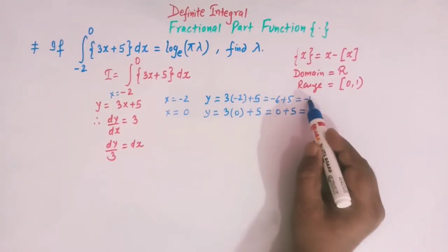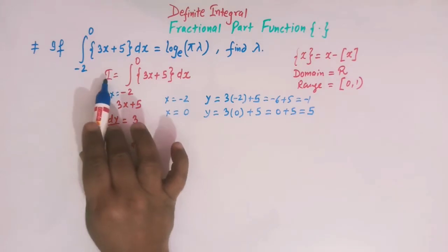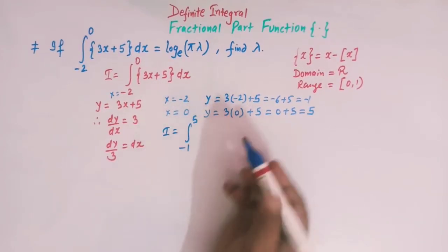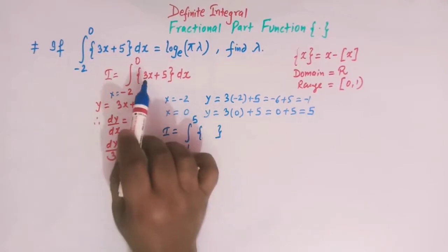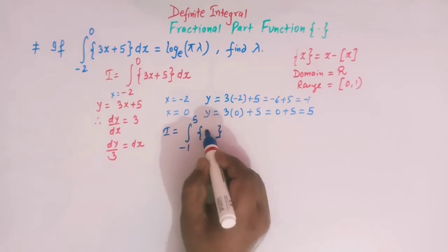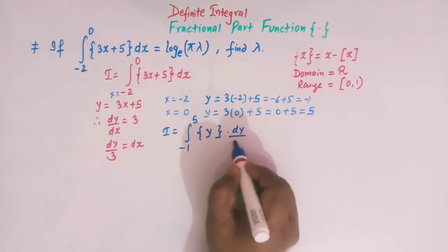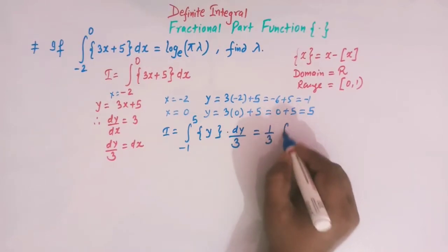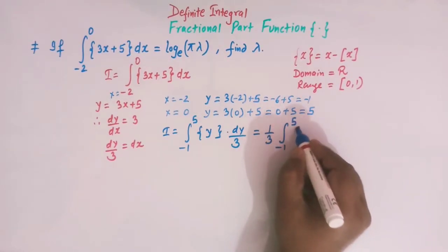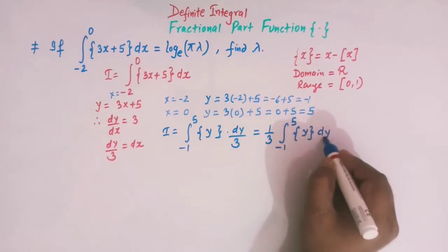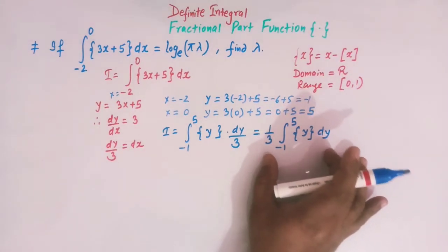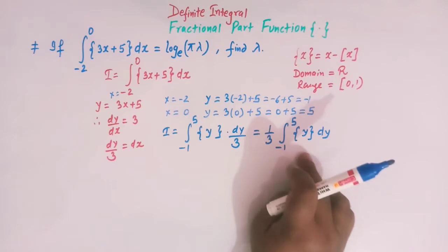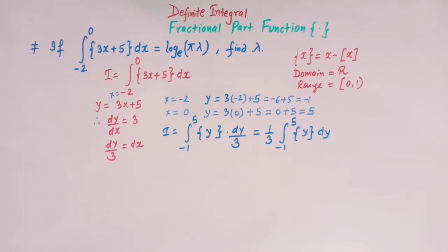So when x varies from minus 2 to 0, y varies from minus 1 to 5. The integral I in terms of y can now be written as the integral from minus 1 to 5 of the fractional part of y times dy/3. Taking the 1/3 outside the integral, we have (1/3) times the integral from minus 1 to 5 of the fractional part of y dy. We now apply an important property of definite integrals for periodic functions.